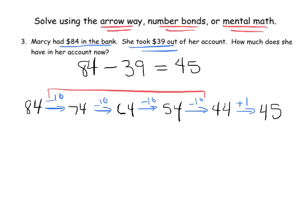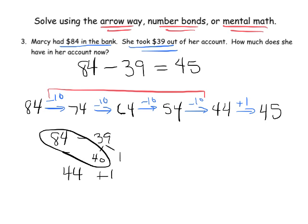We could have used the number bonds method. So 84 minus 39. Now what we could have done is said this is minus, let's see, we could have taken away 40, but then added 1. So we could say 84 minus 40 is 44, but then add in 1, and that gives us 45. That's another way a student might have done it.